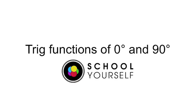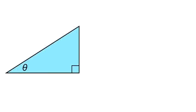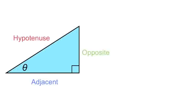Evaluating trig functions for 0 degrees and 90 degrees. Let's say we have a right triangle with an angle theta. Let's label the sides as opposite, adjacent, and hypotenuse.